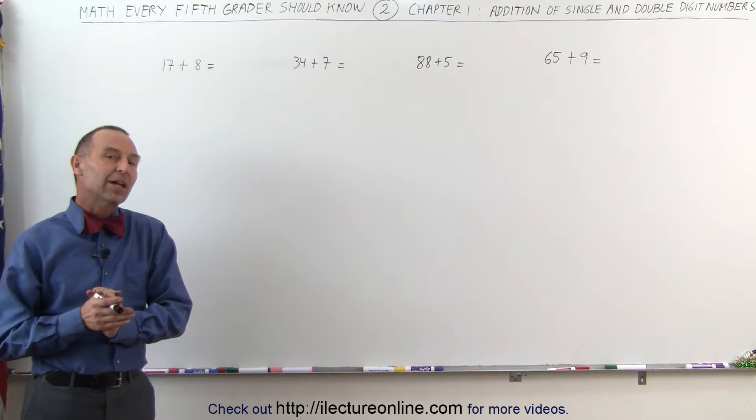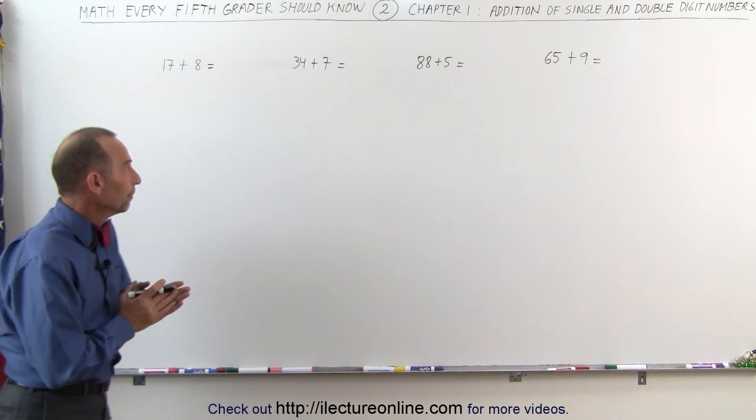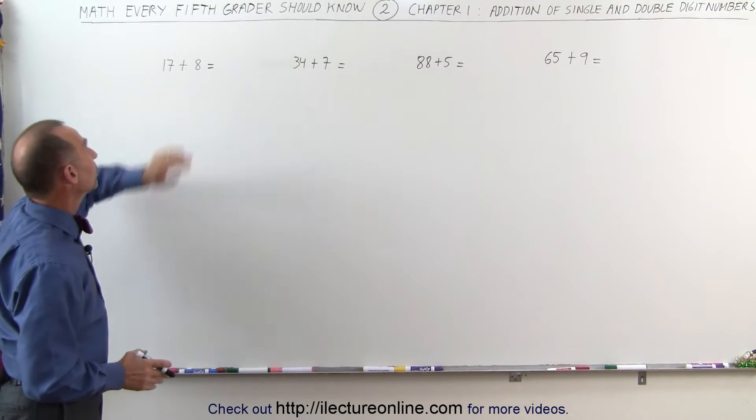Welcome to ElectronLine. Now let's take a look at how we add single-digit and double-digit numbers together. For example, 17 plus 8.